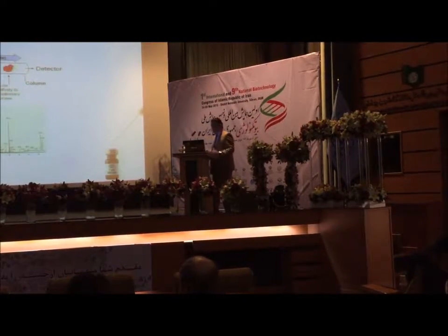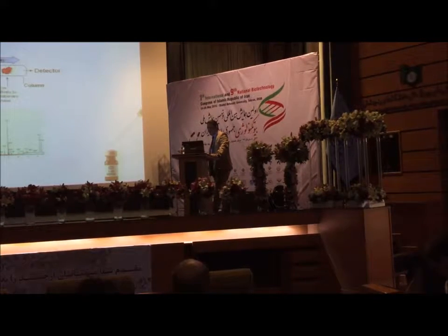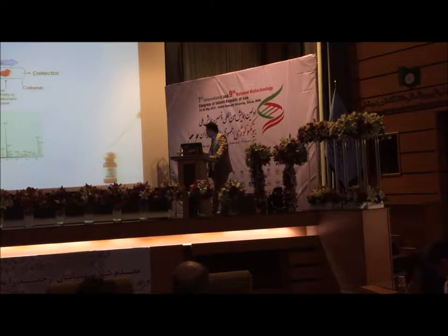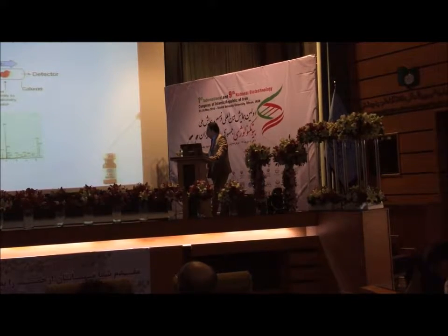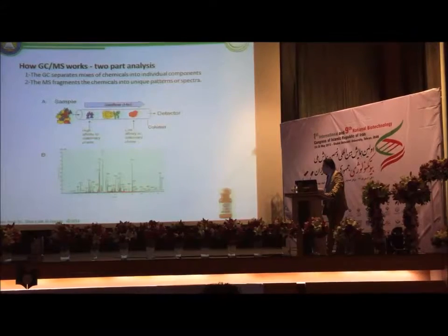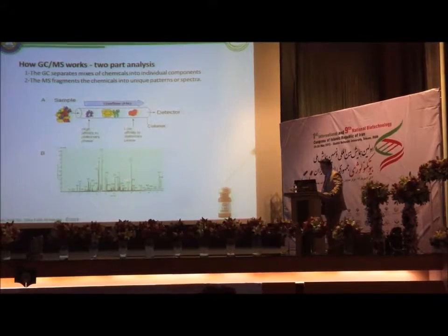How does GC-MS work? First, the GC separates a mixture of chemicals into individual compounds. The sample goes into the column in the GC and all compounds are separated based on their chemical and physical properties, then go to the mass spectrometer where all compounds are fragmented.